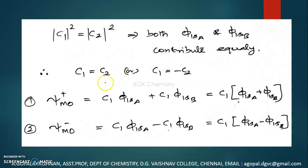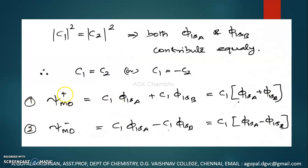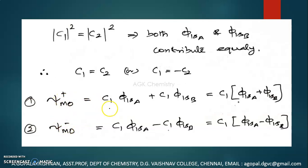So we have two situations. Therefore, the molecular orbital ψ can be written as: one is the plus combination C₁(φ₁ₛ_A + φ₁ₛ_B), and the other is C₁(φ₁ₛ_A − φ₁ₛ_B). The linear combination of the two functions gave two molecular orbital functions. Since these wave functions are functions of the molecule, they must be normalized. By using the normalization condition, we can evaluate the optimal value for the coefficient C₁.